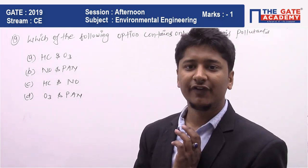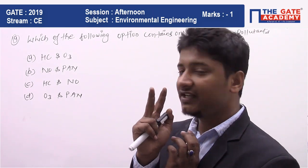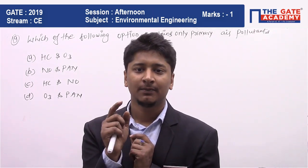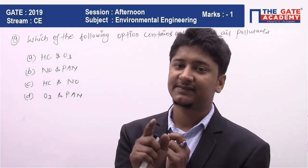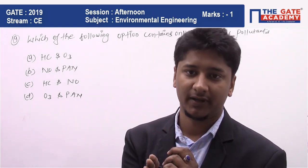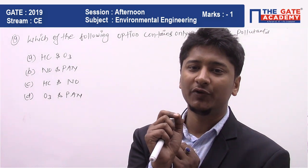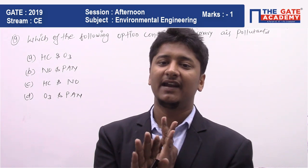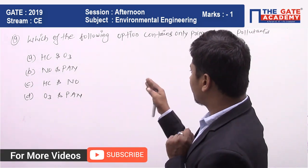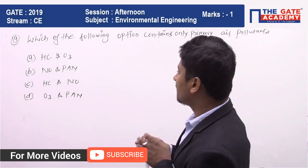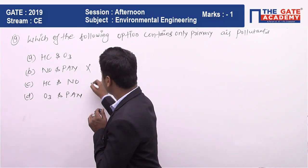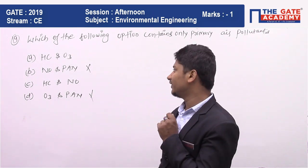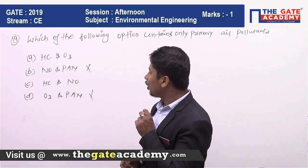You will find PAN in options B and D. PAN stands for peroxy acetyl nitrate, and that is a secondary pollutant. Here is a shortcut: any pollutant whose name starts with the letter P is a secondary pollutant. So PAN → secondary pollutant → options B and D are wrong because the question asks for primary pollutants only.